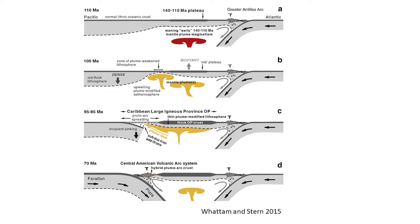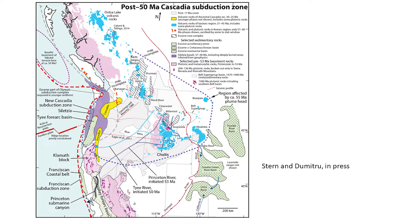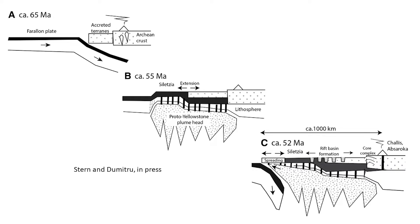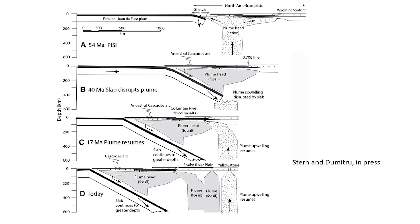A second example of plume-induced subduction initiation is found in the northwestern United States, where the arrival of the Yellowstone plume head in Eocene time caused lithospheric collapse on its western margin, resulting in upper plate extension to form the Siletz terrain in what is now the Cascadia forearc and core complexes in what is now the rear arc. Soon after subduction began, the descending slab cut off the rising plume head. It took 30 million years for North America and the Cascadia subduction zone to migrate west sufficiently to allow the plume to reform and rise to the surface, resuming as the Columbia River flood basalts.